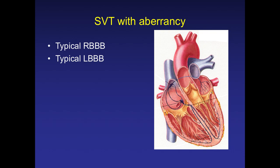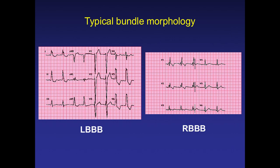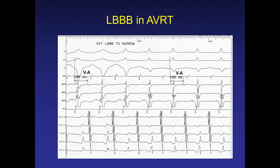With SVT with aberrancy, you will be seeing arrhythmias with bundle branch block — either left bundle branch block or right bundle branch block. Even in those cases, there are algorithms you should look at. This is one classical example where the patient was having an accessory pathway mediated tachycardia, seen during an EP study.